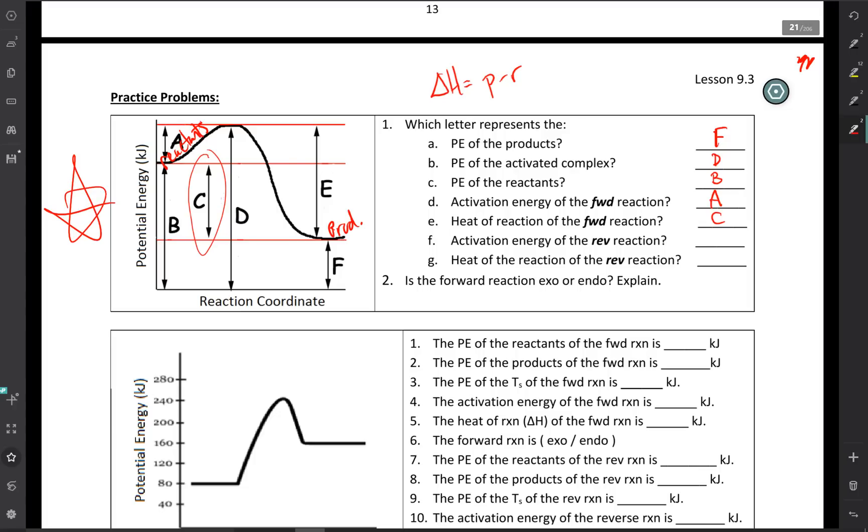If we look at the activation of the reverse reaction. So in our reverse reaction, we're going from products over to reactants. So it's from products to the top of the hill, the highest point of PE diagram. So the activation energy of the reverse reaction looks like it's going to be E.